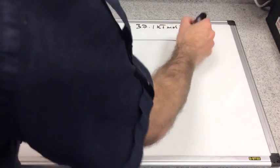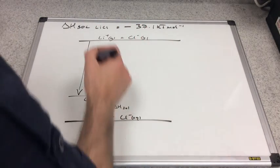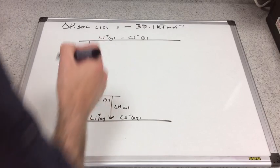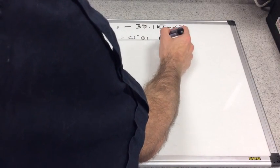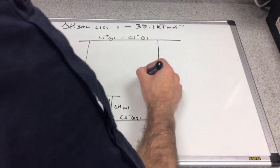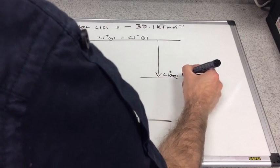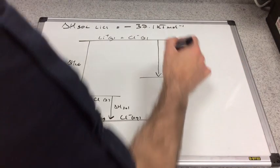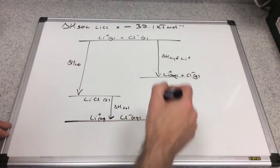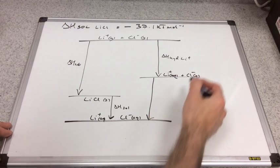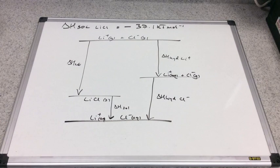We put the gaseous ions up there: Li⁺ gas and Cl⁻ gas. There's the lattice enthalpy. Now we need to connect the cycle with the two hydration enthalpies. This arrow here is Li⁺ gaseous to Li⁺ aqueous — that's delta H hyd for lithium ions. And this is the enthalpy change of hydration of the chloride ion, delta H hyd Cl⁻.